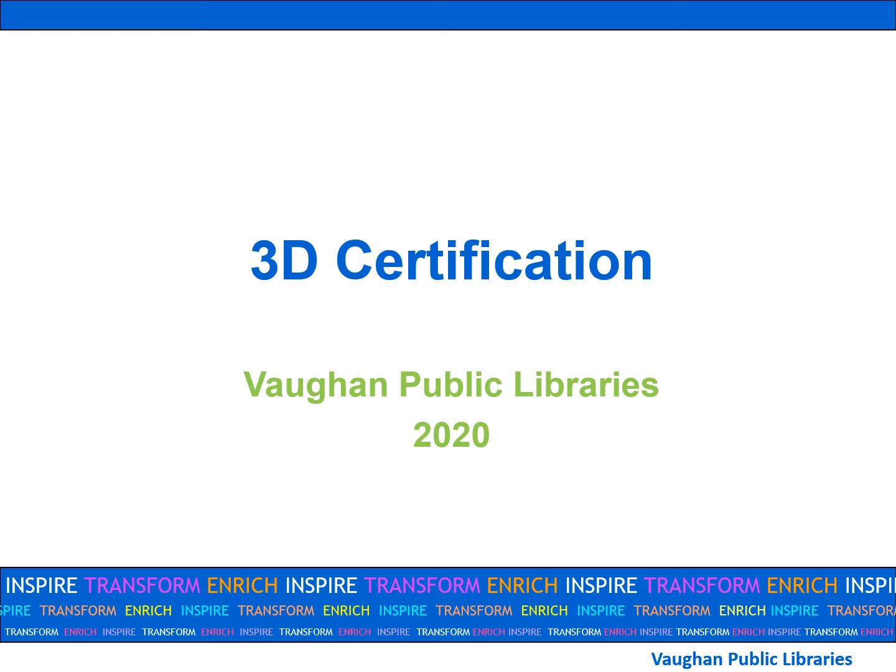Hello and welcome to Vaughan Public Library's online 3D certification course. The purpose of this course is to teach you the basics of how 3D printing and design works, and also to prepare you to use 3D printers at VPL. In order to become 3D certified and make use of the library's 3D printers, you must complete the course and final exam with a passing grade of at least 70%. Now let's get started.